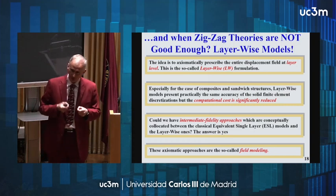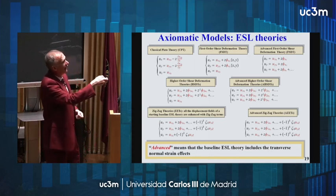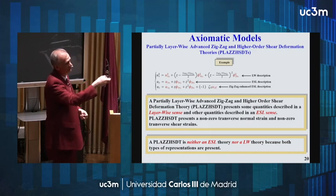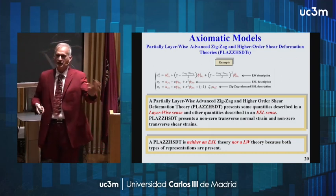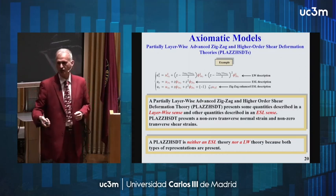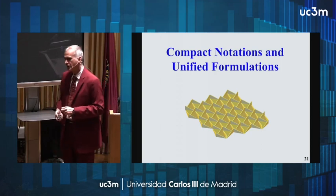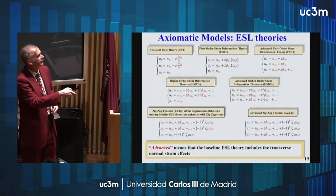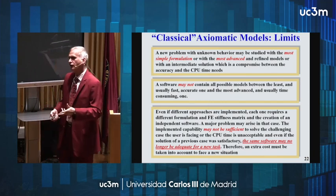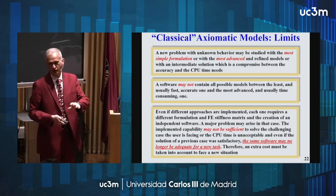People realized they could improve classical models by adding, for example, zigzag functions in the axiomatic mathematical description, to a priori enforce the zigzag form of displacements. You can have layer-wise models, adding terms, complexity, and zigzag effects. You could also apply different fidelity per direction. Because of that, people developed compact notation — a way to write the equations to include all these models in one single formulation. You don't want to change the software when you have a different case.